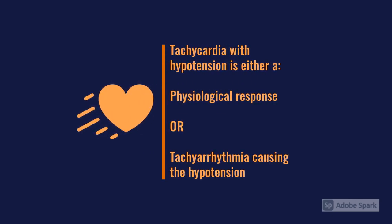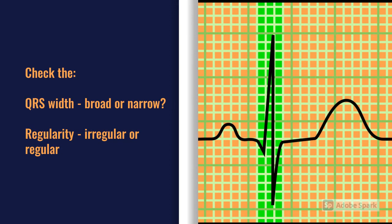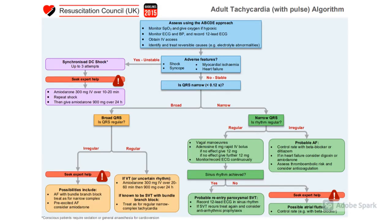You want to know: are they tachycardic as a consequence of their hypotension — a physiological tachycardia — or is the tachycardia the cause of the hypotension? With heart rates generally above 150, we need to be thinking this is probably an SVT, VT, fast AF, or something like that causing the hypotension. Have a quick look at QRS width — broad or narrow complexes — and the regularity. Then follow the ALS algorithm for tachyarrhythmias.